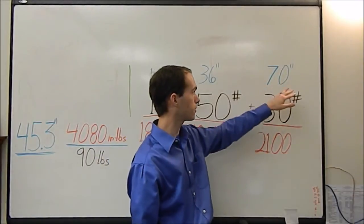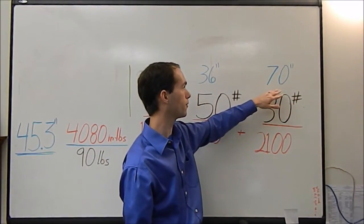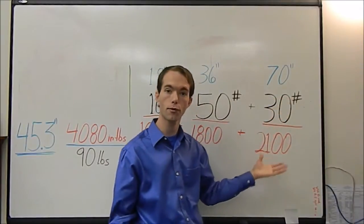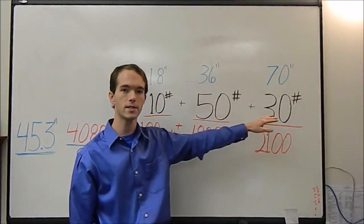Then maybe all the way at the back, or in this case maybe it's midway depending on how big a boat you're building, at the 70 inch mark you've got another 30 pounds. So you've got your distances, you've got your weights at each distance.